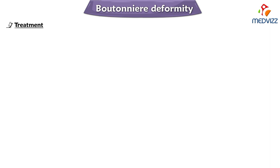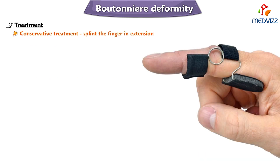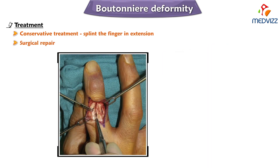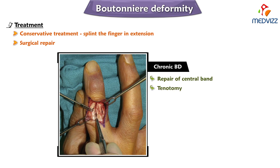Now let us talk about treatment. Treatment is usually conservative — splinting the finger in extension is recommended. Surgical repair is recommended for chronic boutonnière deformity, including repair of the central band, tenotomy, and arthrodesis.